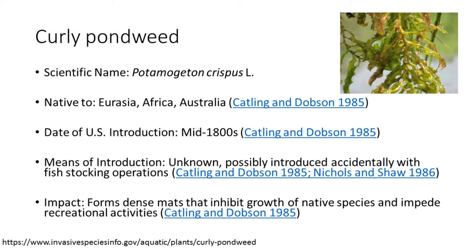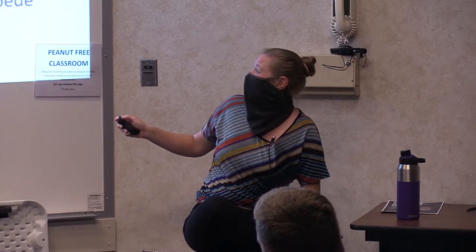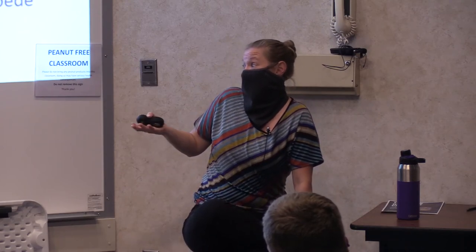Our aquatic plant representative is curly pondweed — it's on the list of the five most unwanted Wyoming aquatic invasive species. How did it get here? Again, an accident — fish stocking. A bucket scooped up some plant material and delivered it somewhere else. It inhibits growth of native species and can form such thick mats that people can't boat in the areas, and if they do, it can disrupt motors.